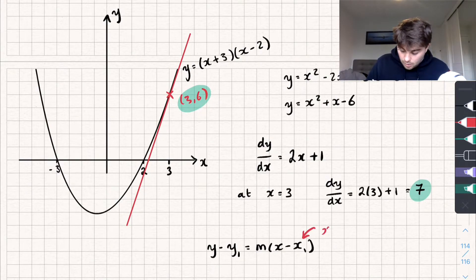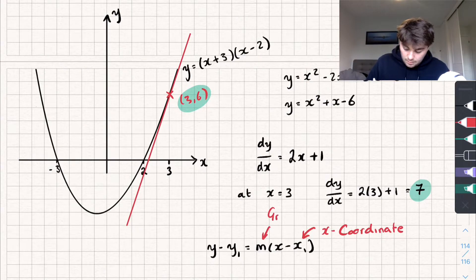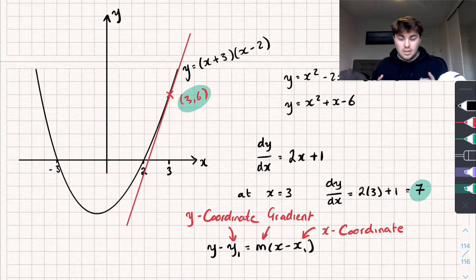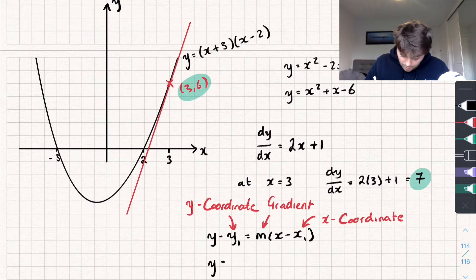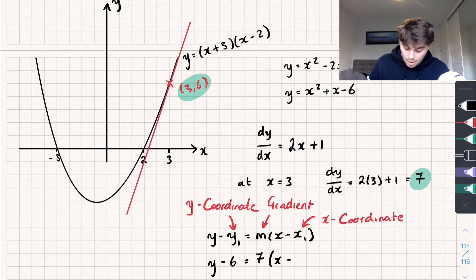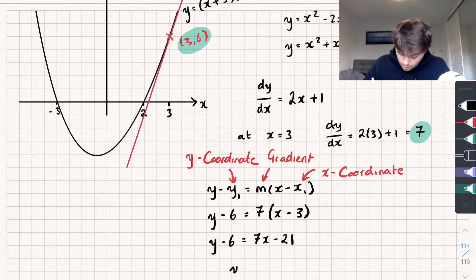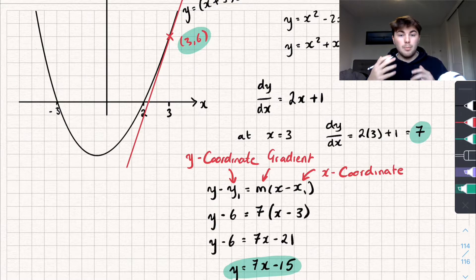In the formula y − y₁ = m(x − x₁), x₁ is our x-coordinate, m is our gradient, and y₁ is our y-coordinate. Substituting everything in: y minus 6 equals 7 times (x minus 3). Expanding the right-hand side gives y minus 6 equals 7x minus 21, and adding 6 to both sides gives y equals 7x minus 15. This is the equation of the tangent to the curve at the point (3, 6) — that's quite straightforward.